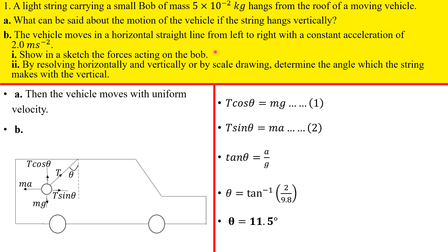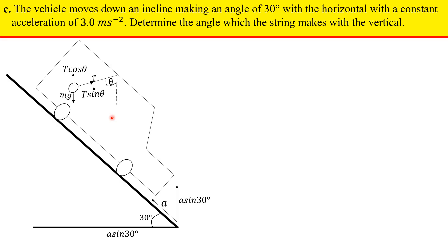Let us go to part C. The vehicle moves down an incline making an angle of 30 degrees with the horizontal with a constant acceleration of three meters per second squared. Determine the angle which the string makes with the vertical. I really love this part C. I hope you can take your time to really try it out and see if you get the same result as I'm going to get. If you try it out, just get your answer and comment under the video. I love this problem because of this part. So let us evaluate what is happening. This is now our vehicle moving down this incline at an acceleration of three meters per second squared.